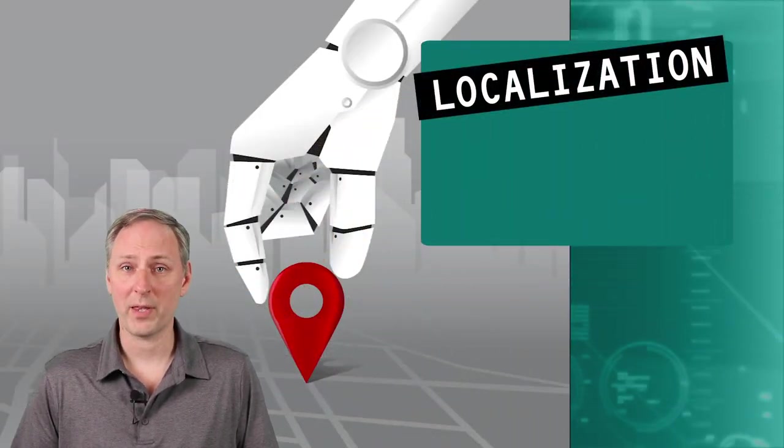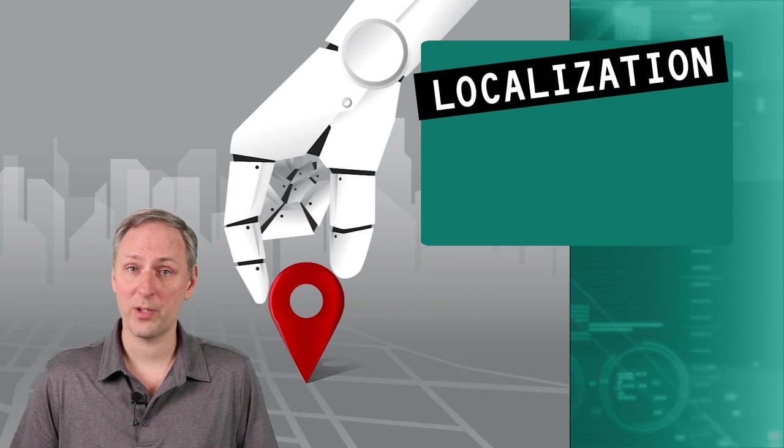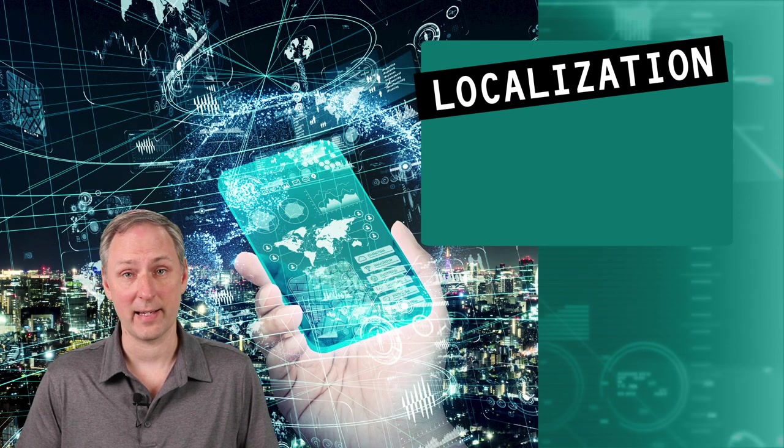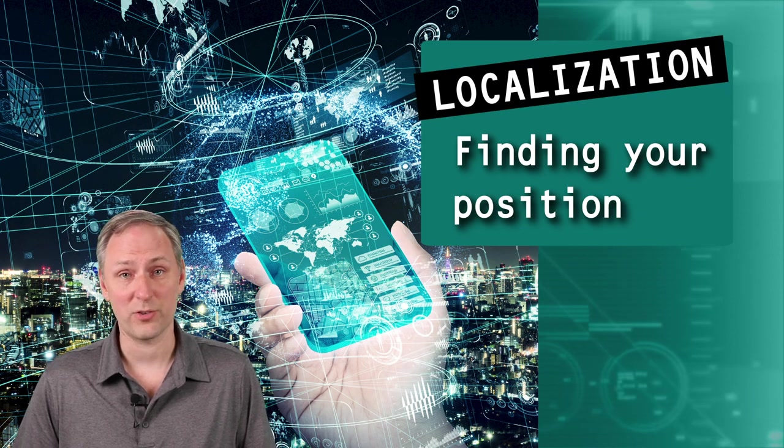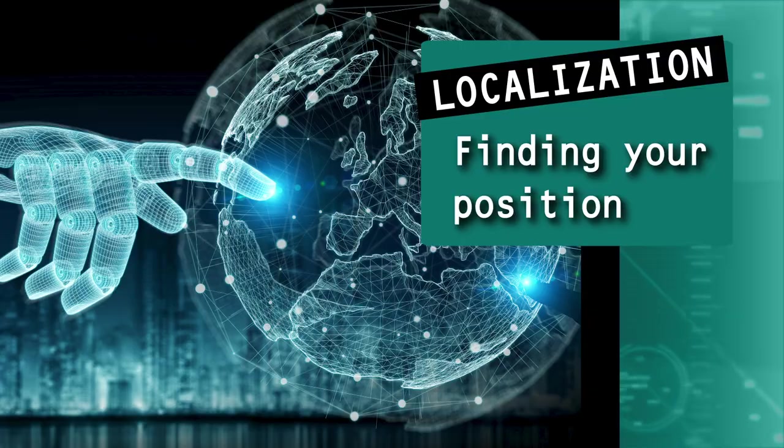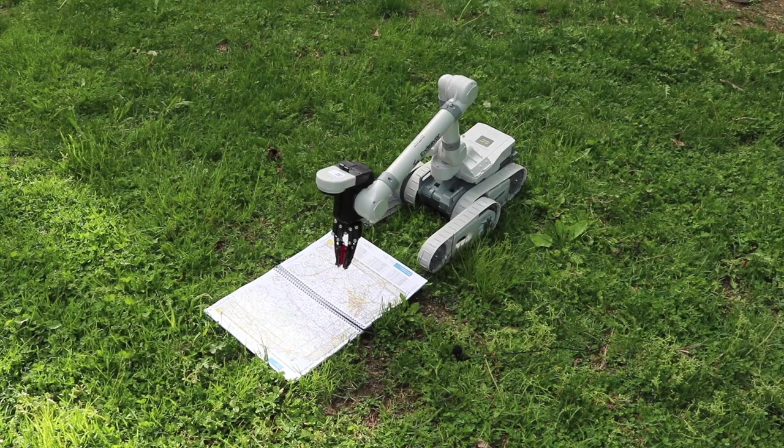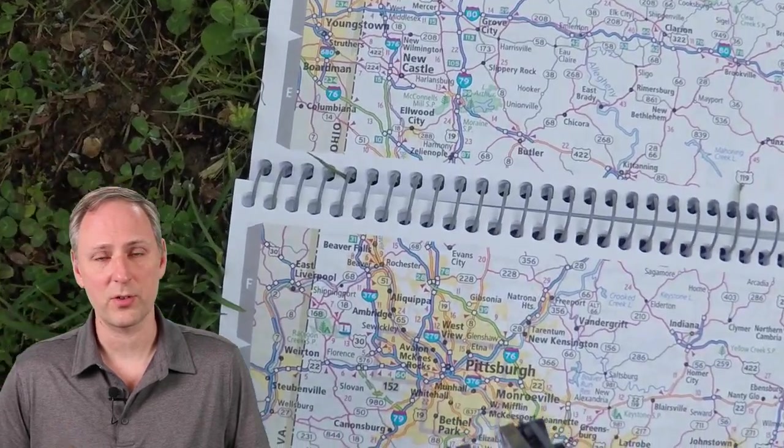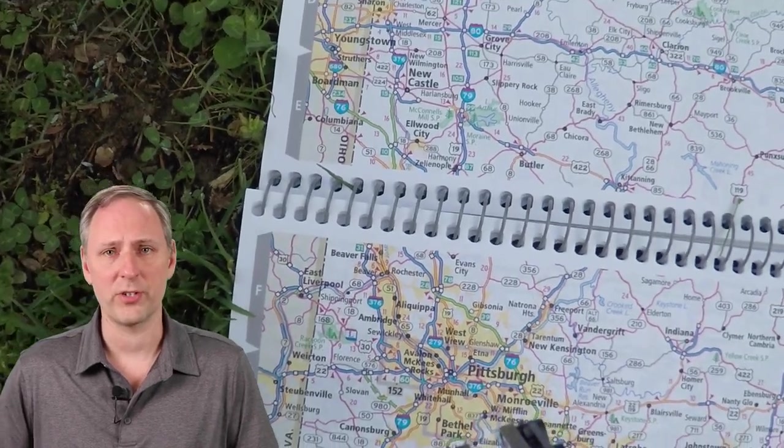So what do we mean when we say localization? One thing the robot needs to do its job is to know where it is on the map. Localization is finding that position on the map. It literally means the process of getting located. Robots can localize using their internal systems and sensors, or they can use external systems such as GPS. In either case, the general approach is very similar.